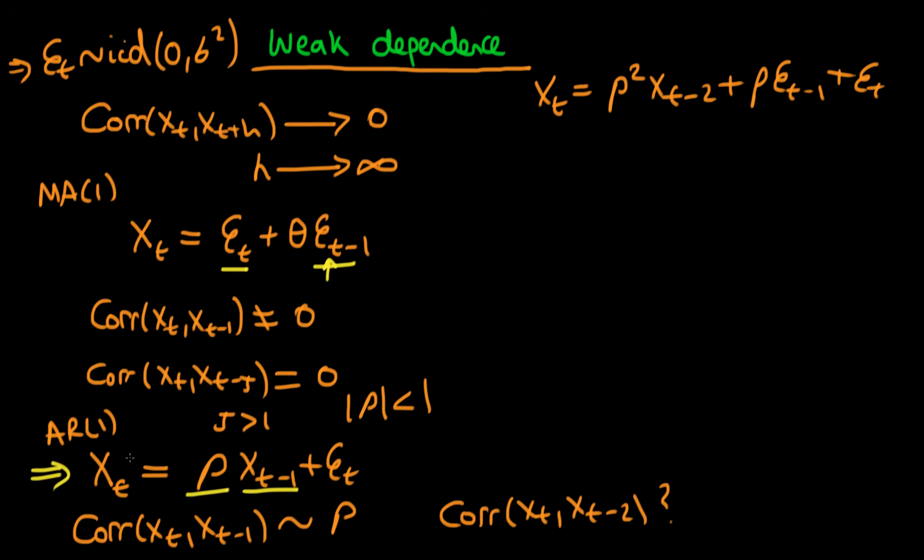X_{t-1} must equal ρ times X_{t-2} plus ε_{t-1}. When we do this substitution, it becomes clear that the correlation of X_t with X_{t-2} involves ρ². If the modulus of ρ is less than 1, the correlation of X_t with X_{t-1} is greater in magnitude than the correlation of X_t with X_{t-2}.